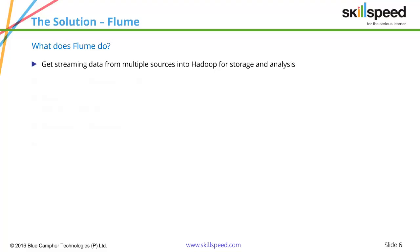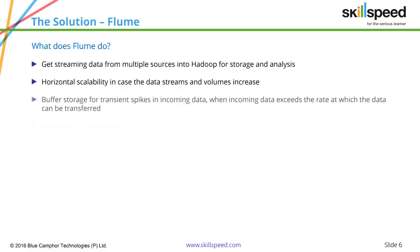When you want to store the data, Flume gives you a lot of options — you can either store it directly into Hadoop (HDFS) or a real-time system such as HBase. Flume gets streaming data from multiple sources into Hadoop for storage and analysis, from a variety of sources like log files, Twitter data, and social media data. It also provides horizontal scalability in case data streams and volume increase. You can configure a Flume agent, which is completely scalable depending upon the amount of data you want to stream.